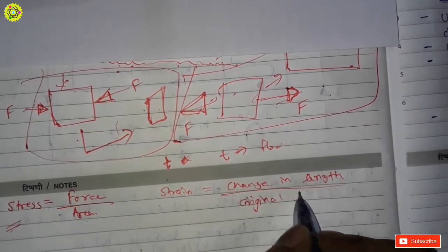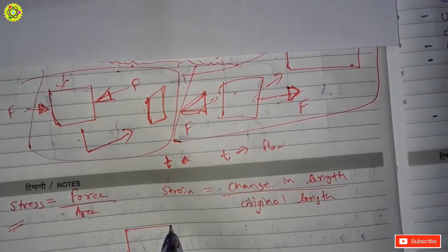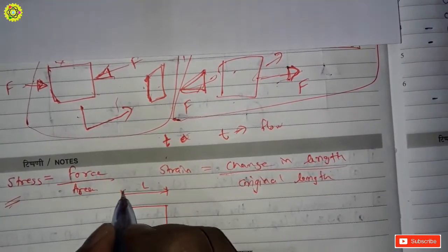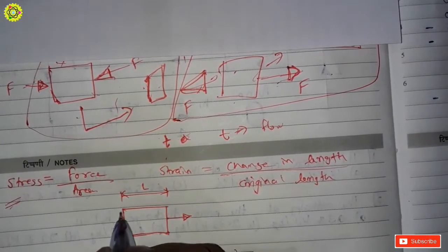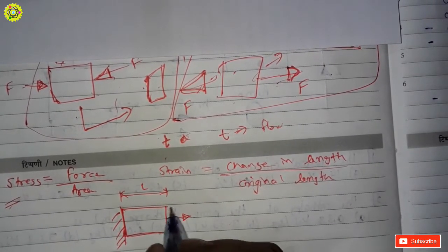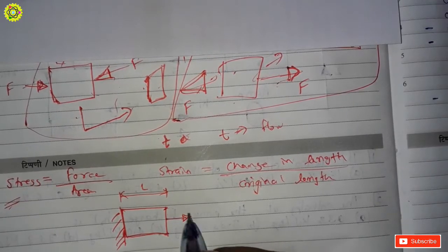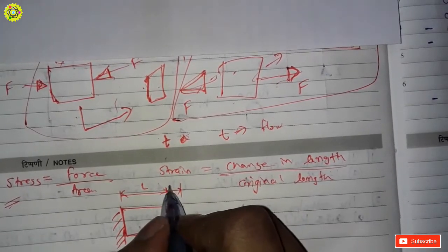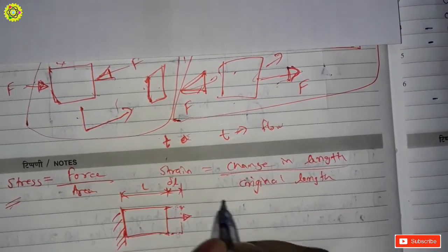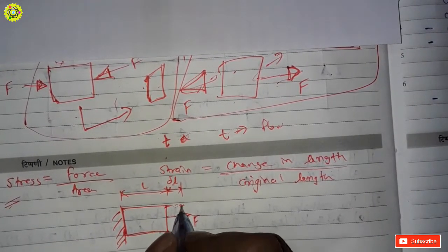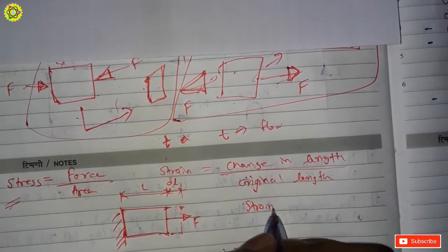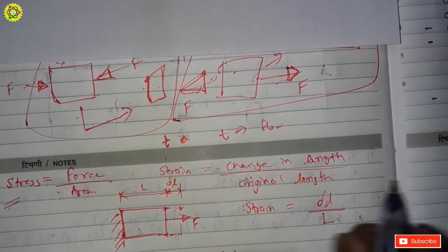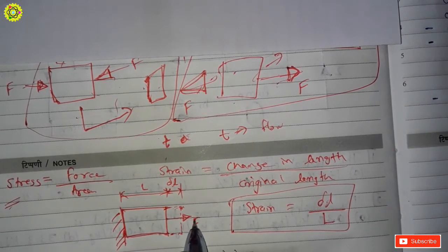Suppose this is a particle with length L. If we fix it on one side and pull it, it changes its size and elongates by delta L. In the strain formula, strain equals delta L divided by the original length L.